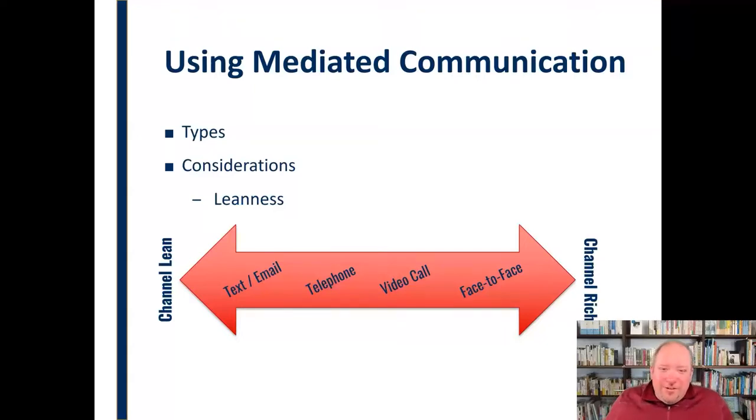So it's still on the scale of channel lean to channel rich, it's relatively rich, this type of communication is. You get to the telephone, and again, you're pulling back a few more channels. So it's more channel lean. You have the words. You have the tone of voice and things like that, but you can't see their facial expressions. You can't see whether or not they're doing the dishes while they're talking to you. You can't see all these other aspects, so it's more lean than, for example, a video call or a face-to-face conversation.